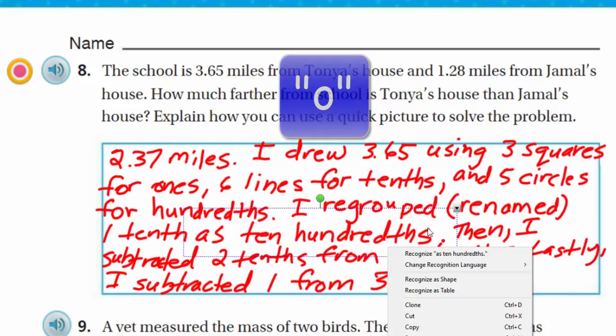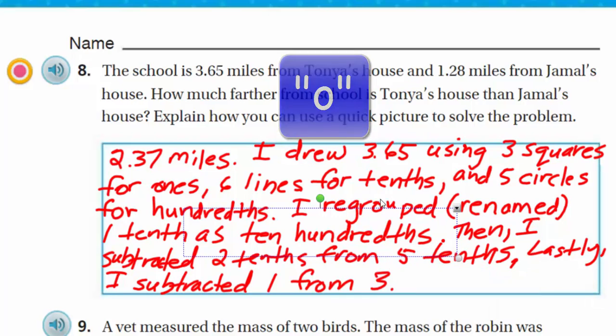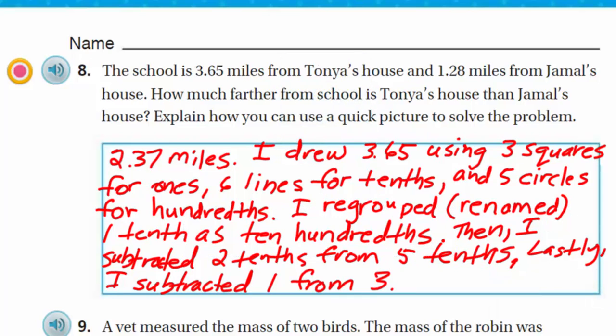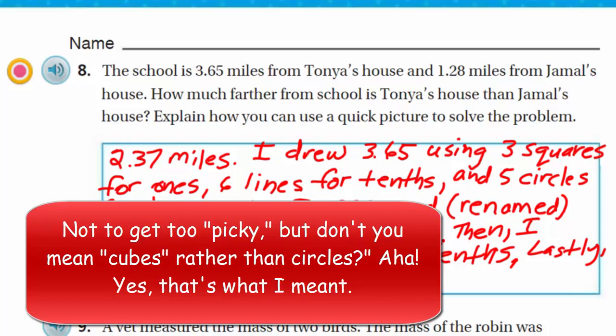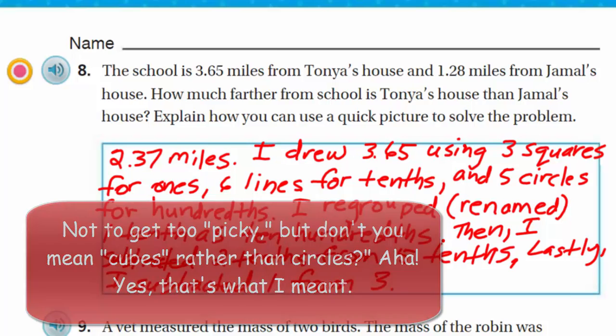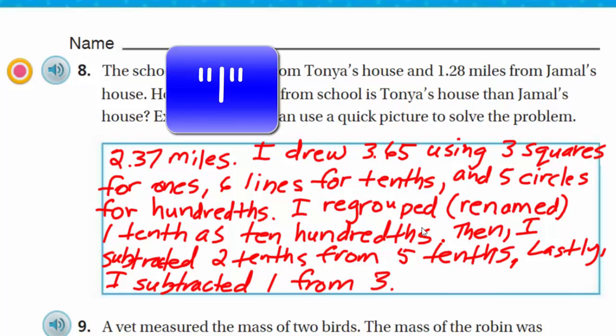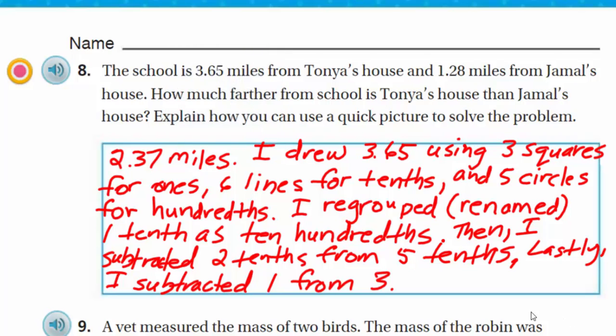So let me go ahead and write something up here and describe everything that we did. So the answer was 2.37 and the unit of measure was miles. I didn't do it in exactly this order, but here's my answer. Now I drew, I definitely drew the model here for 3.65 using three squares, six lines for tenths and the five circles for hundredths. And I did the same thing for the 1.28 and I showed it here.